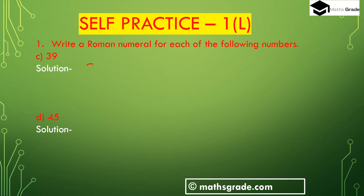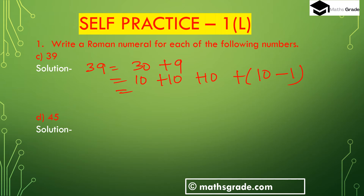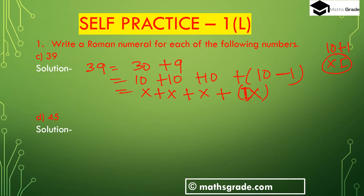Part (c): 39. We can write 39 as 30 plus 9. Here 30 is 10 plus 10 plus 10, which is XXX, and 9 is 10 minus 1. Since there is a subtraction, we write the smaller numeral first: 1 is I and 10 is X, giving IX. So 39 in Roman numerals is XXXIX.